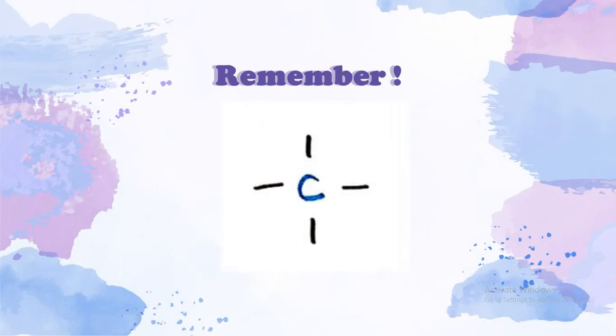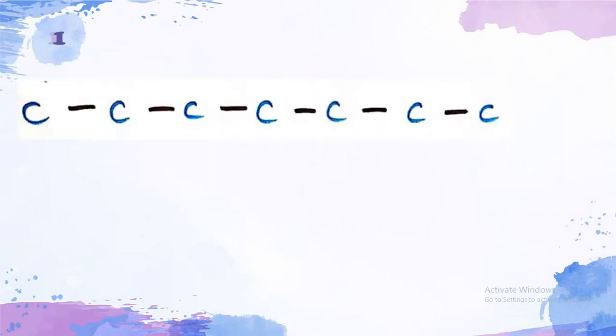So, let's start finding the isomers of C7H16. To find isomers of a molecule, you should start from the basic structure by drawing all the carbon atoms in a line.